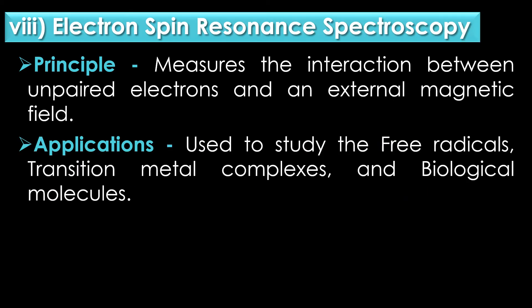The eighth type is electron spin resonance or ESR spectroscopy. ESR spectroscopy measures the interaction between unpaired electrons and an external magnetic field. It is used to study free radicals, transition metal complexes, and biological molecules.